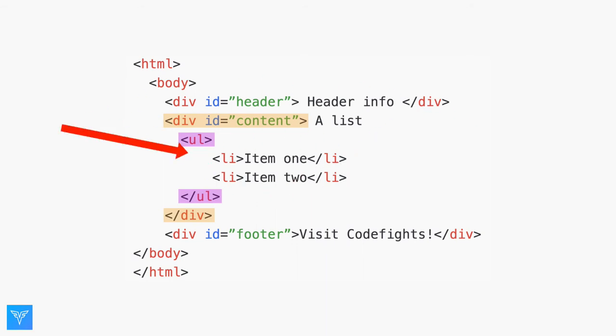Item one's parent is the unordered list, and the unordered list's is the content div. The root node is the HTML element. The HTML node's only child is the body node. The three divs are siblings. They are all children of the body node.